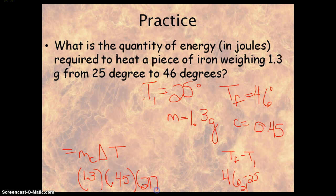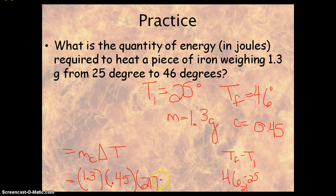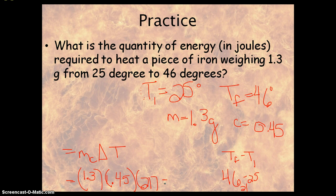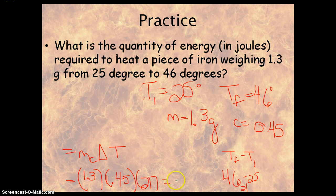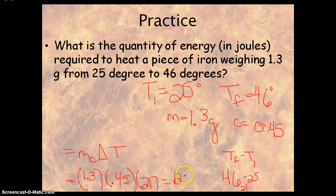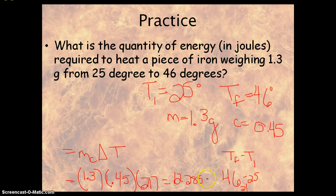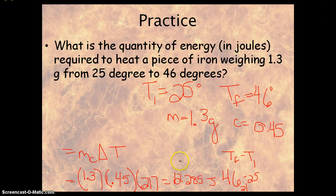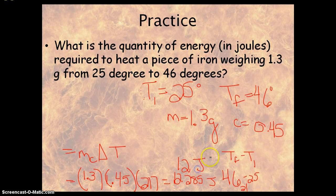We're going to plug that in. So we got 1.3 times 0.45 times 21 equals 12.285 joules. Now you should sig fig. The most we have are two sig figs, so we're going to sig fig this down to 12 joules.